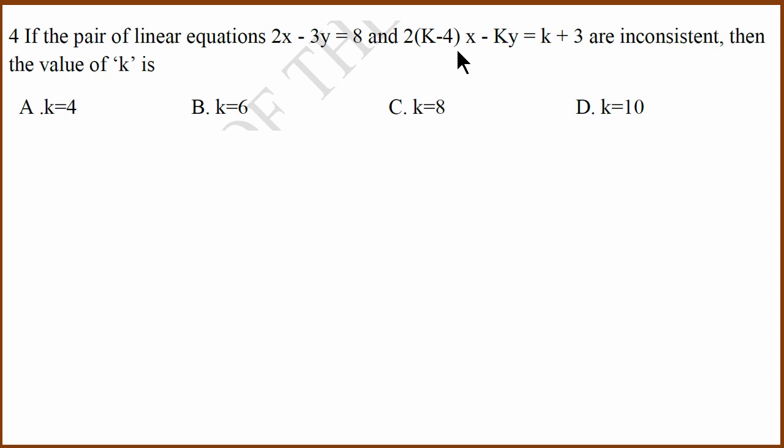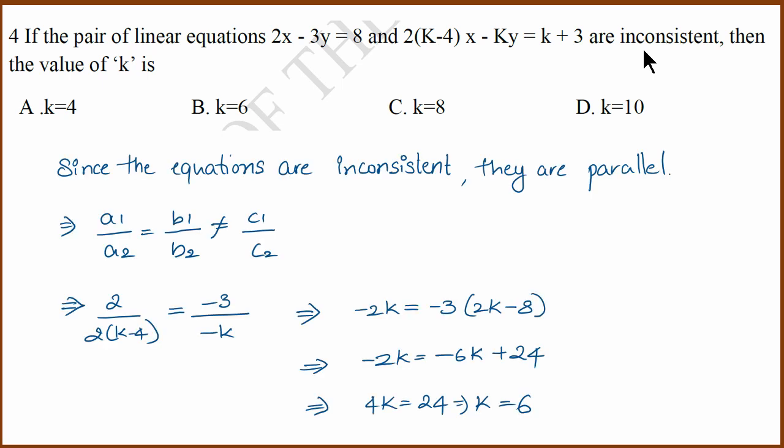Next question, find the value of k if they are inconsistent. If they are inconsistent, they are parallel. What will be true? Since they are inconsistent and parallel, this is going to be true. I have taken a1 by a2 equals b1 by b2. If you simplify this, you can show that k equals 6. The correct answer is k equals 6.